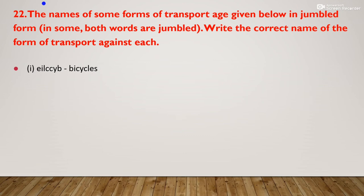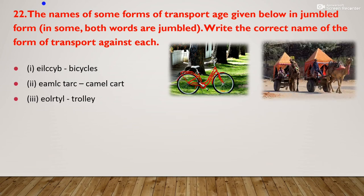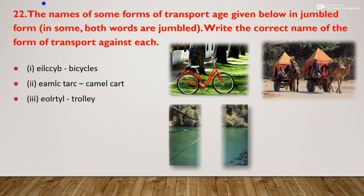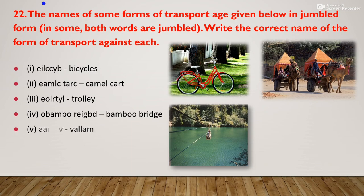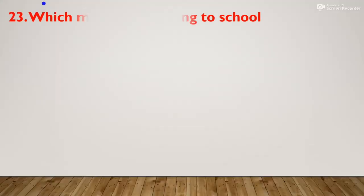The names of some forms of transport are given in jumbled form. Arrange them correctly: E-I-L-C-C-Y-B = bicycle; E-A-M-L-C T-A-R-C = camel cart; and also arrange trolley and bamboo bridge and ballam.